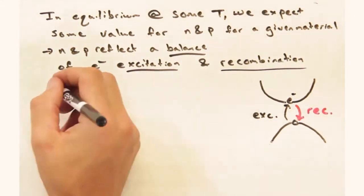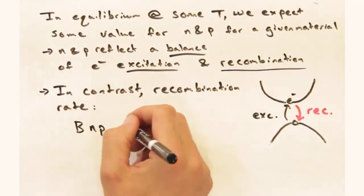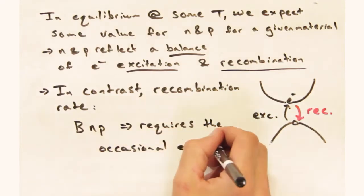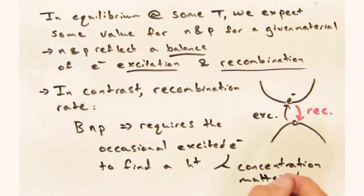How about the recombination rate? Let's call that B. Again, I'd expect that to depend on temperature, but this time I expect it's also going to depend on n and p, since the excited electron has to have holes to recombine with.